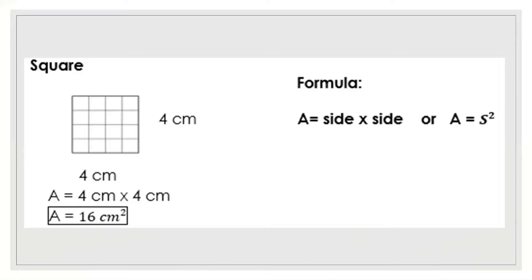So we have the different kinds of polygon and how are we going to get the area. First is the square. The formula: A stands for area, and it is equal to side times side, or A is equal to s squared.